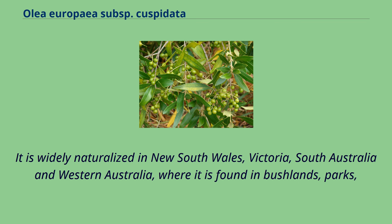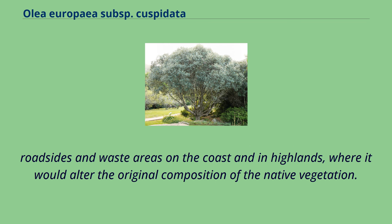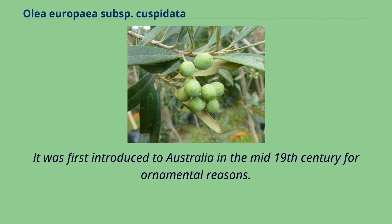It is widely naturalized in New South Wales, Victoria, South Australia, and Western Australia, where it is found in bushlands, parks, roadsides, and waste areas on the coast and highlands, where it alters the original composition of the native vegetation. It was first introduced to Australia in the mid-19th century for ornamental reasons.